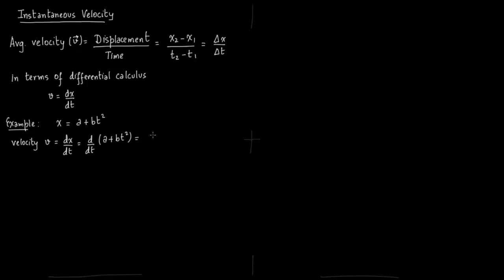This becomes d/dt of a plus d/dt of bt squared. Now a is not a function of t — it is just some arbitrary constant — so d/dt of a is 0. And b is a constant, so it comes out. d/dt of t squared gives you 2t, so you get 2bt.